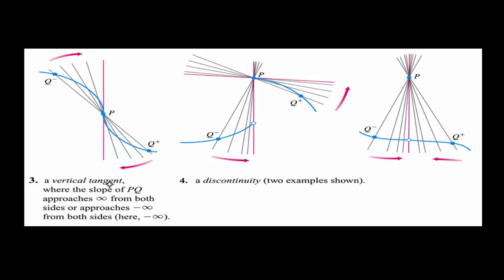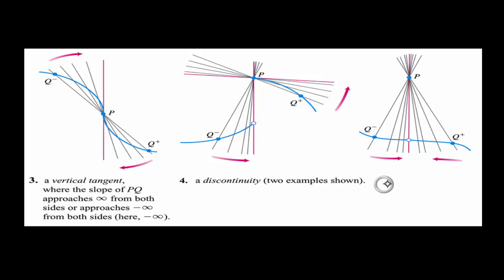A third case is a vertical tangent, where the slope of a vertical line is undefined. Then when you have a discontinuity — such as a jump — you can't have a common tangent line, so the derivative is undefined. In another discontinuity case, the point p is defined somewhere else not on the curve, so there's no differentiability there either.